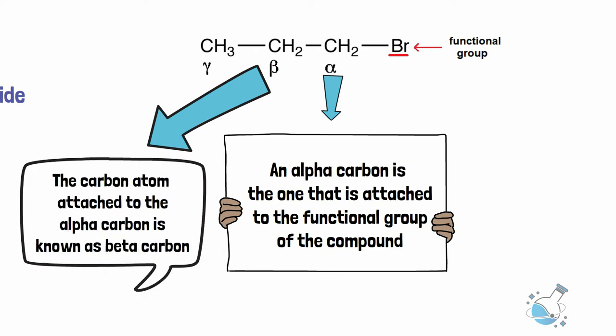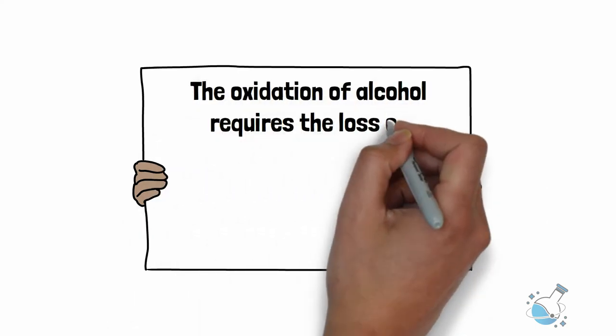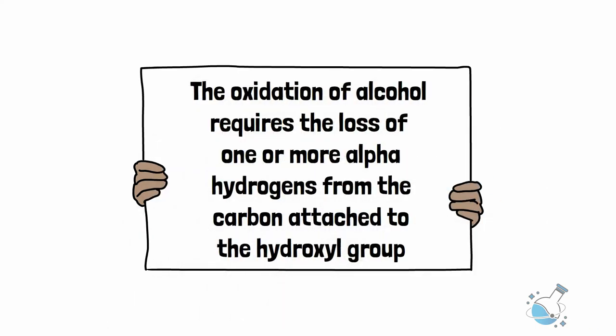The carbon atom attached to the alpha carbon is known as beta carbon. The oxidation of alcohol requires the loss of one or more alpha hydrogens from the carbon attached to the hydroxyl group.